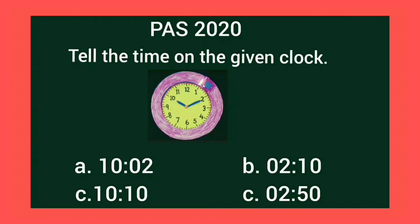Students, now we discuss one question — tell the time shown on the given clock. Four options are given and we have to choose the correct one. The hour hand is on number 10 and the minute hand is on number 2. So the time is 10 minutes past 10. The correct option is C. Put a tick on option C.